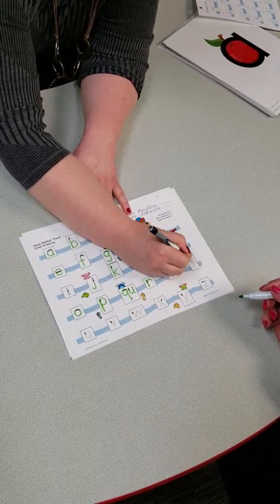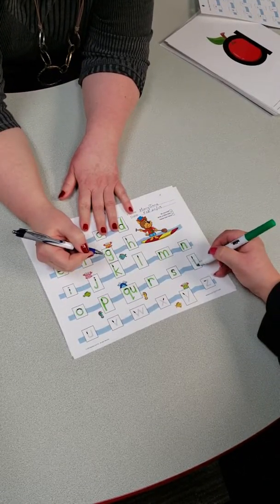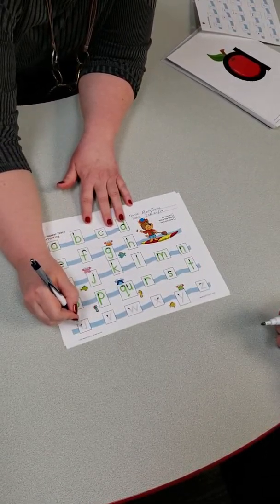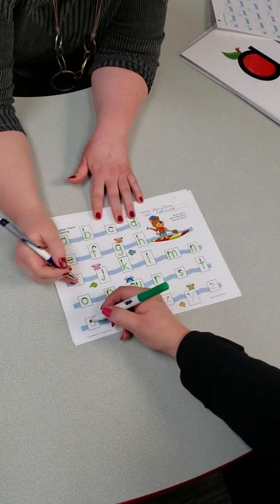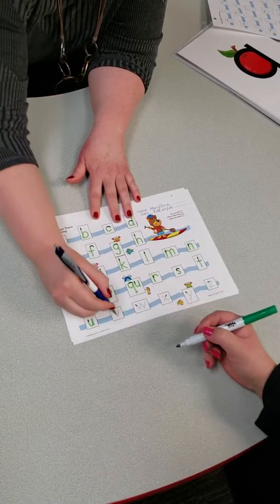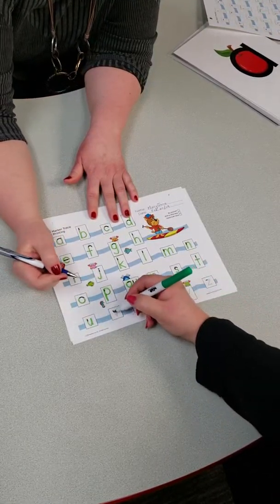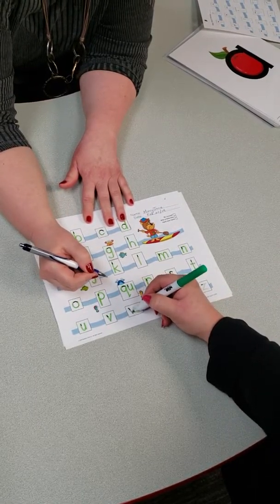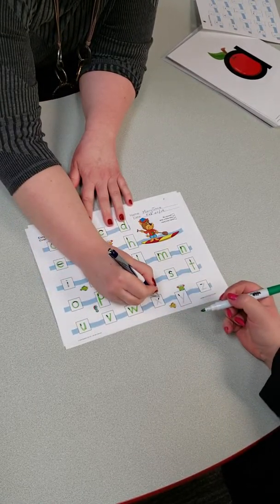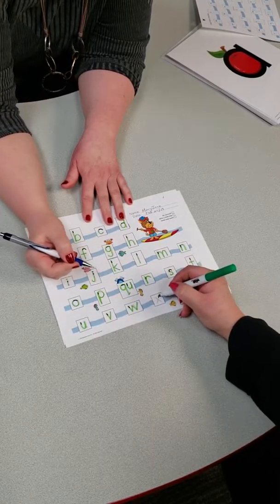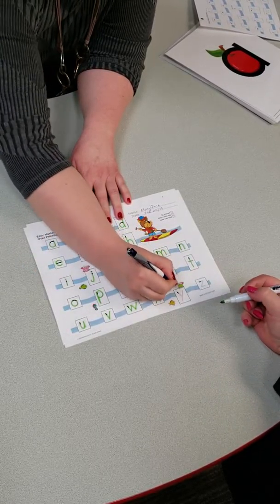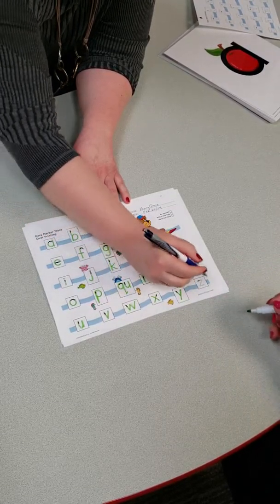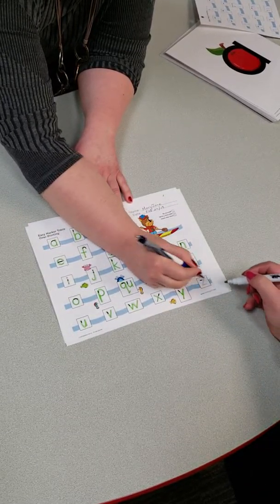T is for tiger. We're always using the associated words that go with the picture. U is for underwear. V is for vampire. W is for water. X is for X marks the spot. Y is for yogurt. And the last one is Z is for zipper.